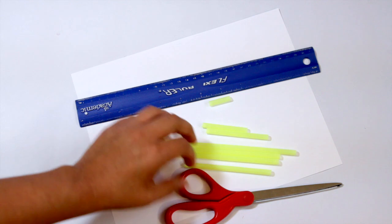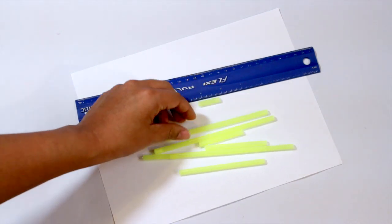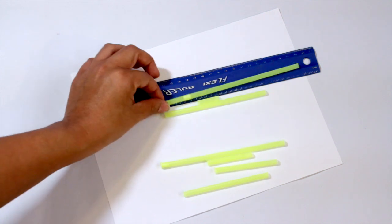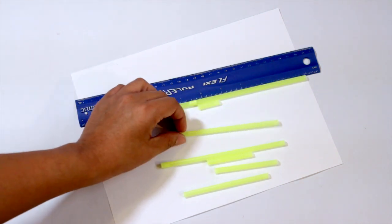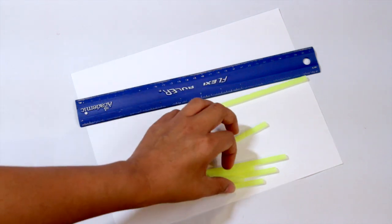I have a ruler, a set of straws and scissors. I went ahead and cut one set of straws in one inch increments. I have one that's seven inches and I cut all the way down to one inch. You can have more than one set if you wish. I just have one set for demonstration.